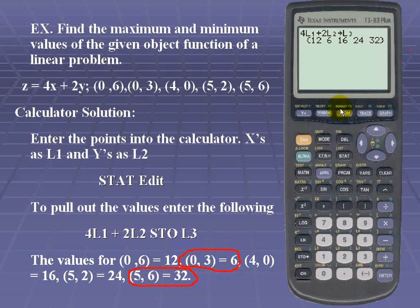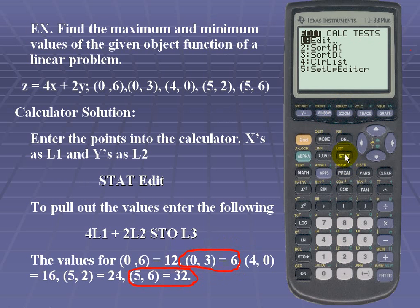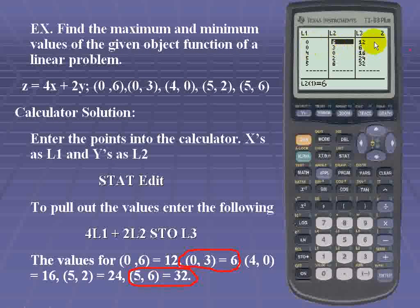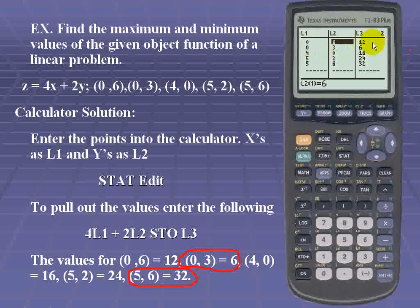And we can also take a look at the list on our calculator. So we'll simply hit stat. And we want to edit our list, so we'll simply press enter. And notice once again, we have our ordered pairs and our maximum and minimum values.